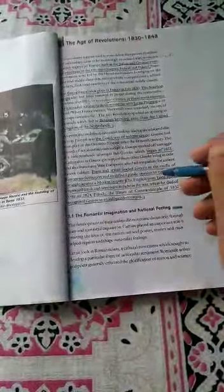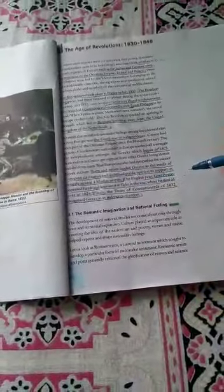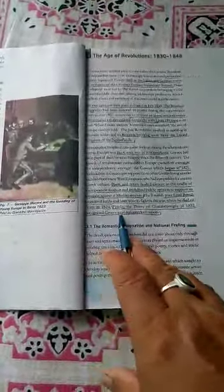The poet Lord Byron organized a fund and later went to fight in the war, where he died of fever in 1824. Finally, the Treaty of Constantinople of 1832 recognized Greece as an independent nation.